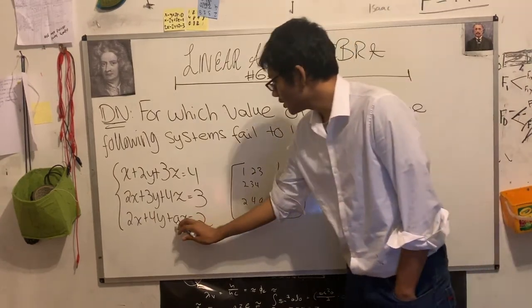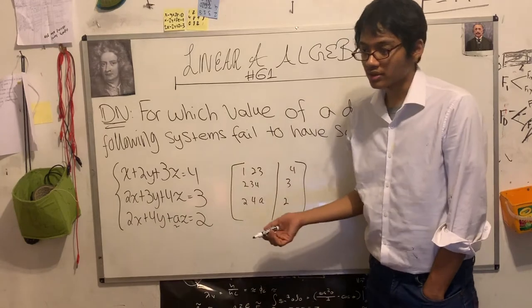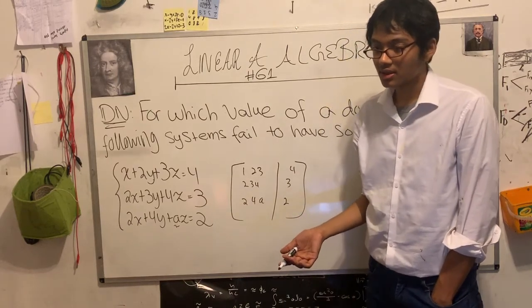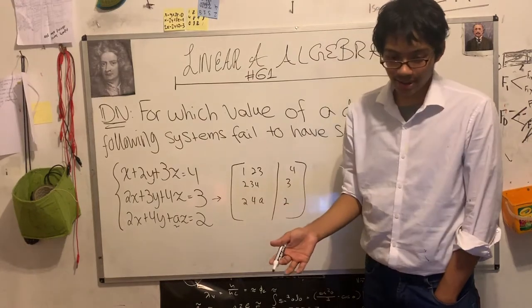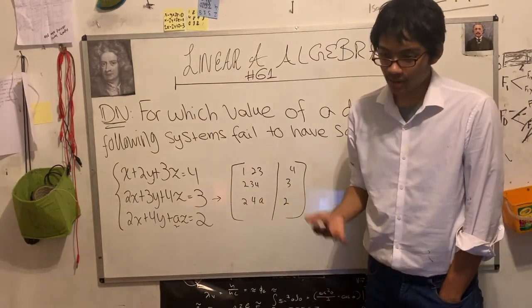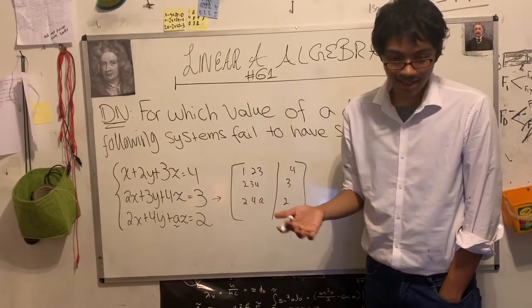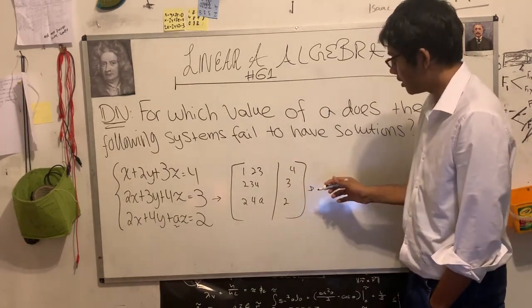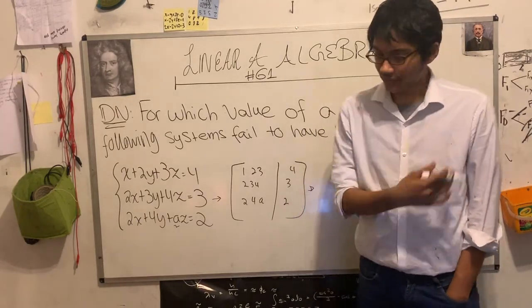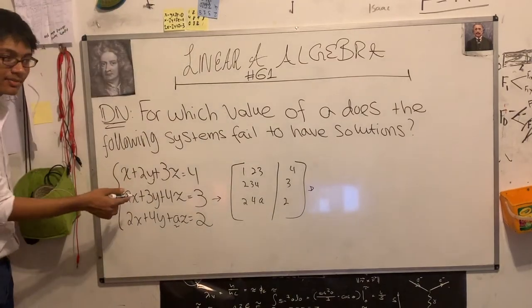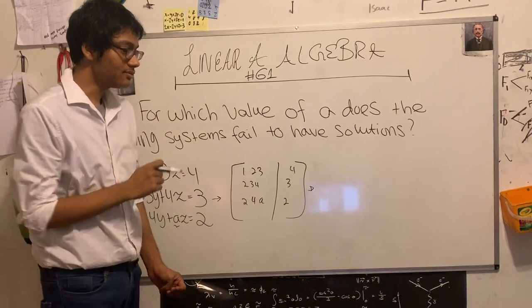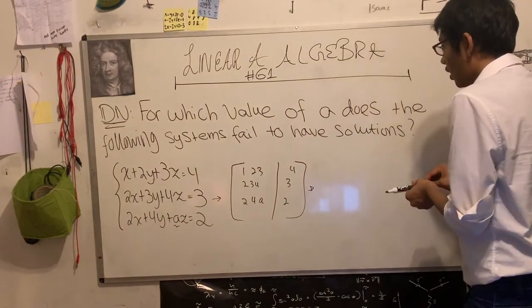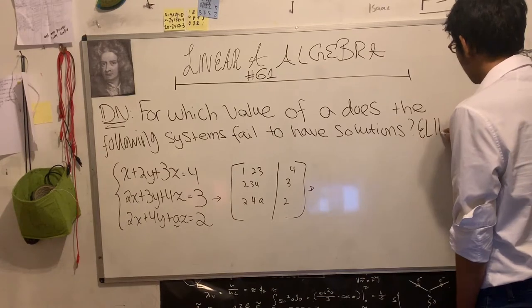First of all, we have to solve this system of equations. How do we solve a system of equations? We use matrices, right? We use something called Gauss-Jordan elimination, which you might have heard of. Otherwise, it's also known as Gaussian elimination. Jordan actually had nothing to do with it and was credited after Gauss's death for no reason whatsoever.